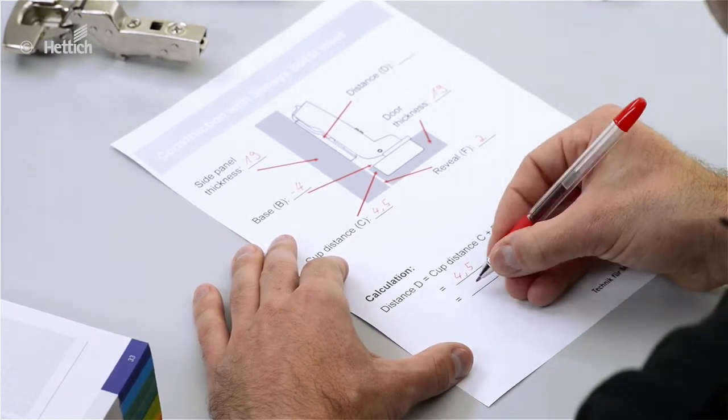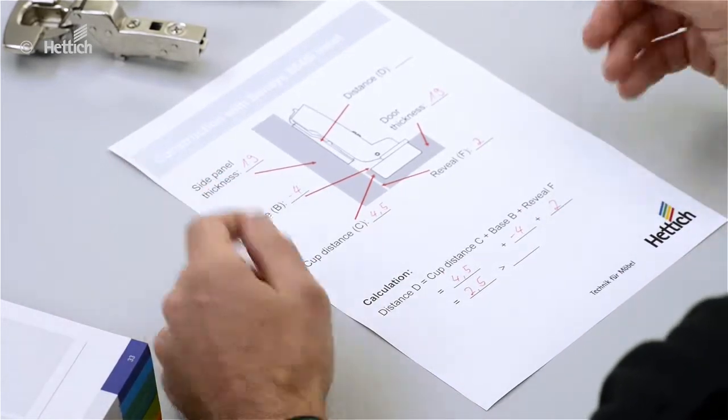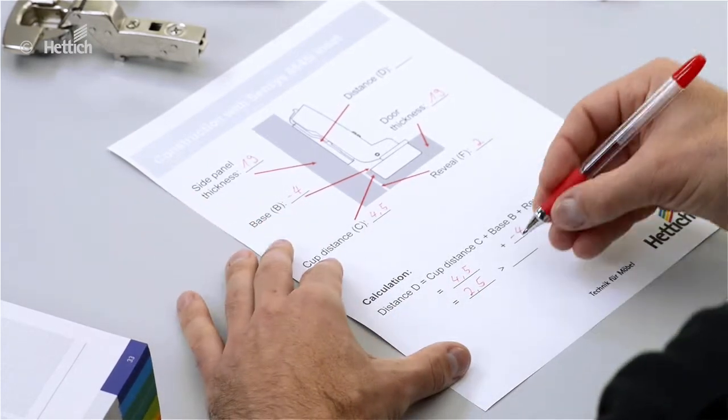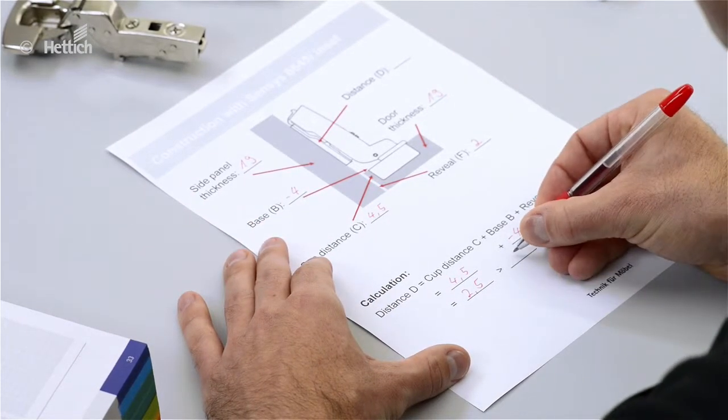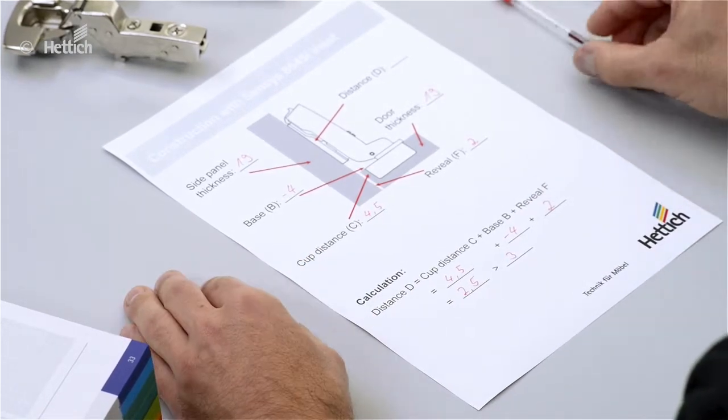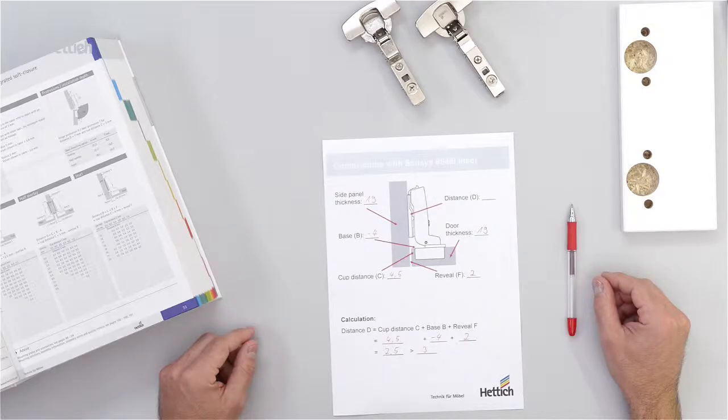So we get a value of 2.5 millimeters but this mounting plate distance doesn't exist so we choose the next bigger size which is 3 millimeters. The resulting difference of 0.5 millimeters has to be adjusted with the overlay adjustment screw integrated in the hinge.